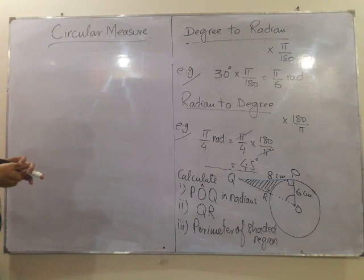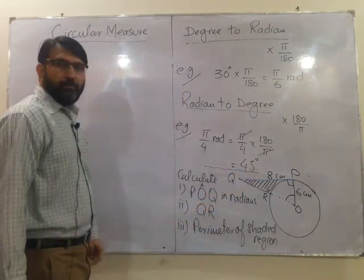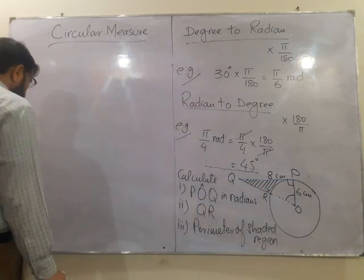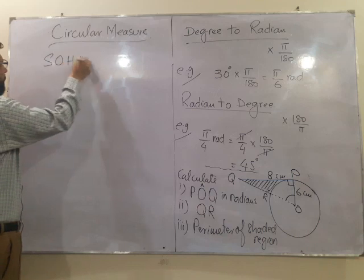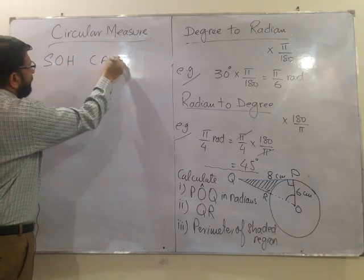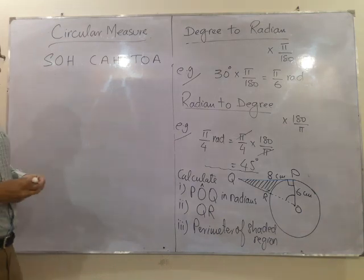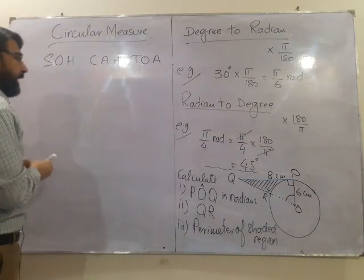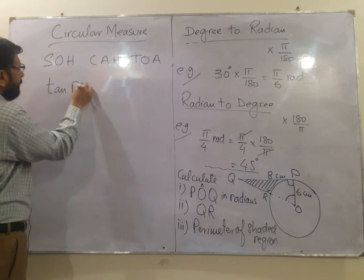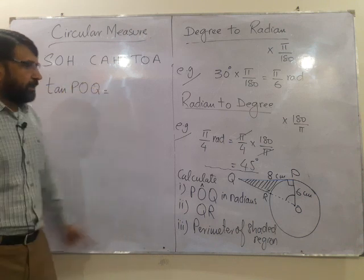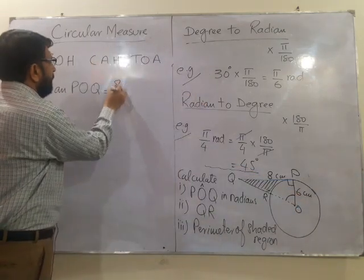If you will see the angle, opposite to this is given and the side adjacent to this is given. So by using SOHCAHTOA, we can use opposite over adjacent.